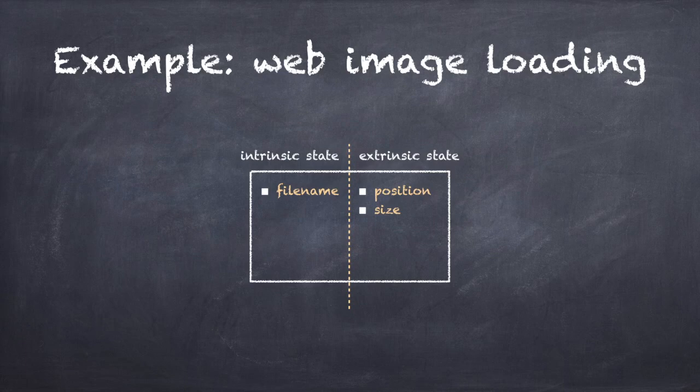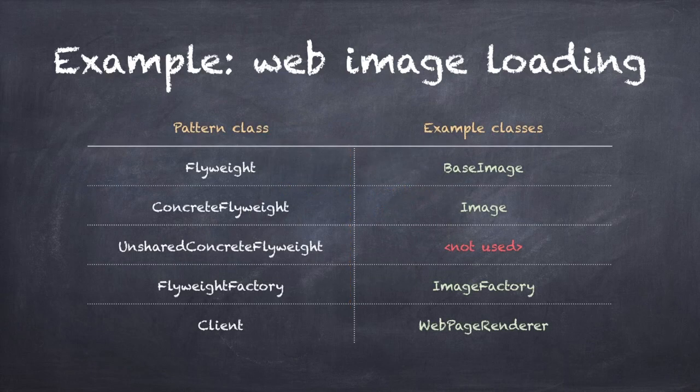I am going to need an image class that derives from flyweight and contains a filename member and a display method. I will not use unshared flyweight in this example, so I don't have to implement the unshared concrete flyweight class. That leaves me with the following classes. Let's take a look at the code.